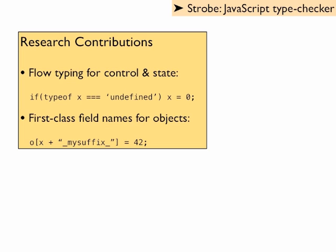The most significant tool we've built on top of LambdaJS is the Strobe type checker for JavaScript. There are two novel research contributions underlying Strobe. First, flow typing augments the type checker with support for patterns of control and state. When JavaScript programmers use type testing and assignment to distinguish types in their programs, the type checker is sensitive to those operations. Second, JavaScript lets programmers use arbitrary strings in field lookup and assignment. We've built support for string patterns and first-class field names into Strobe to handle these uses.